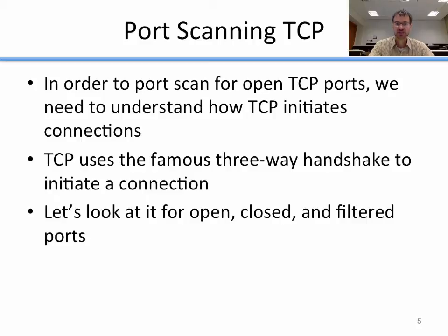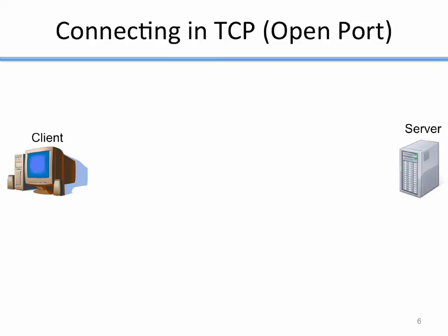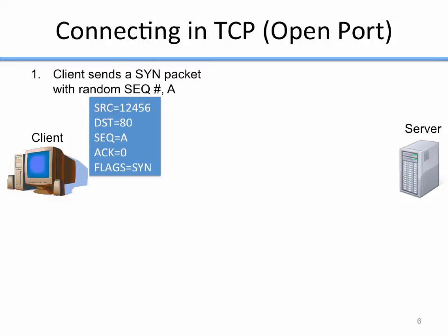Let's look at what the three-way handshake looks like when connecting to an open port, a closed port, and a filtered port. If I'm connecting to an open port in TCP, first my client sends a SYN packet with a random sequence number — we'll call that A. It sets the SYN flag in the flags field and sends that to the server.